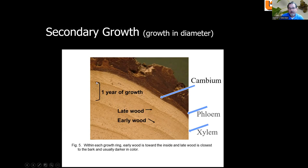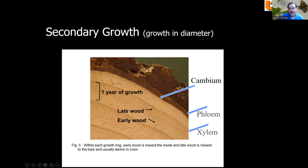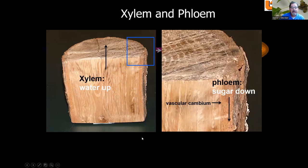Here are the growth rings. Each year, the cambium produces early wood first, followed by late wood. Early wood is produced in spring — the pores are larger and carry water up so leaves can flush. Later in the growing season, growth slows and a darker ring forms in the late wood. The xylem region is sometimes called sapwood, while the inner portion is heartwood. The phloem is where sugar comes down, with the vascular cambium right between the two.